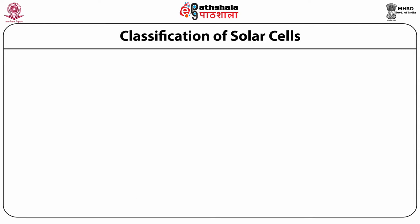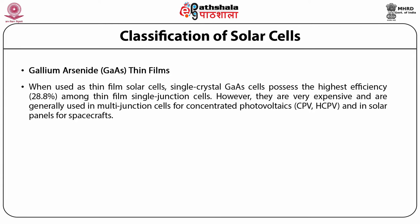Let us discuss the application of gallium arsenide thin films in solar cell development. When used as thin film solar cells, single crystal gallium arsenide cells possess the highest efficiency, i.e. 28.8%, among thin film single junction cells. However, they are very expensive and are generally used in multi-junction cells for concentrated photovoltaics (CPV, HCPV) and in solar panels for space applications.